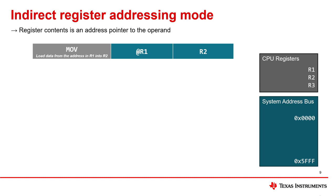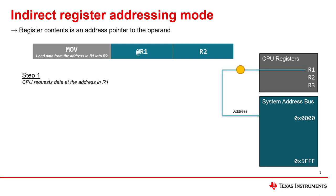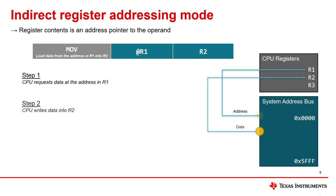This next addressing mode is called indirect register addressing mode. When using this addressing mode, the operand is not stored in a register — instead, the address of the data is stored in a register. To get this operand, the CPU will read the address in the register and then get the data at that address on the system bus. In this move instruction example, R1 uses indirect register addressing and R2 uses normal register addressing. First, the CPU reads the contents of R1 and uses it as an address on the main system bus. Then the CPU retrieves the data at that address and writes it back to R2.